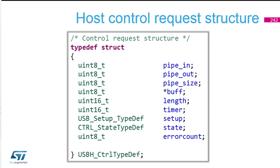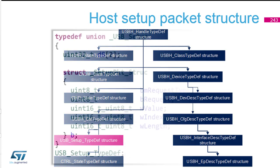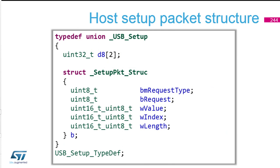The control typedef tells you which pipe you are using, where your buffer is, what the length is, and the timer for timing the application — for example, to put a timeout so you don't get stuck if something is not responding. If you want to send some type of request, as you saw during the first day theory, the packet structure includes value, index, request, and request type fields.